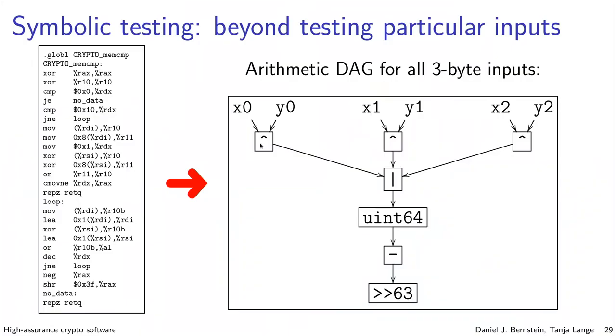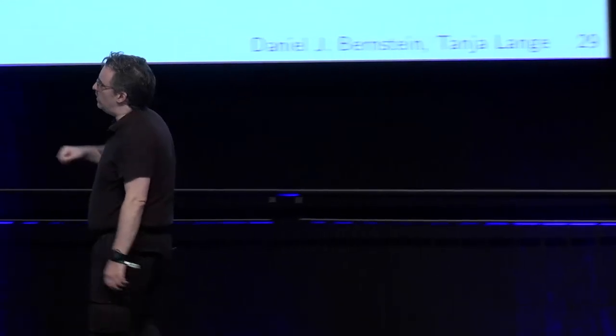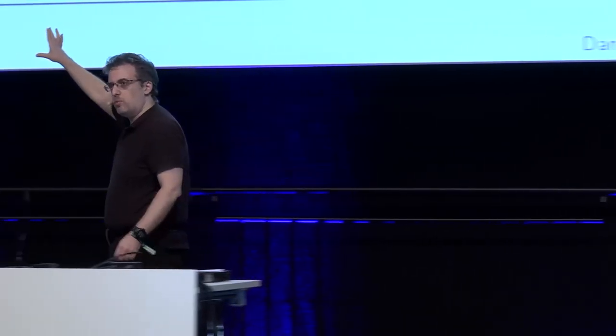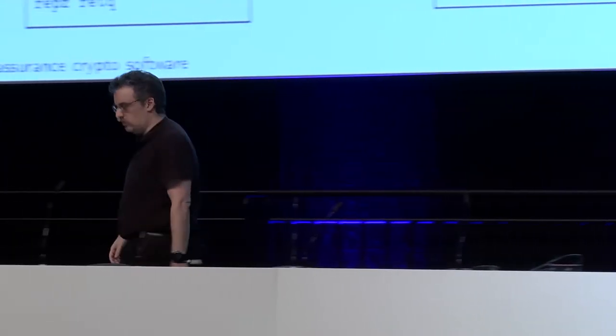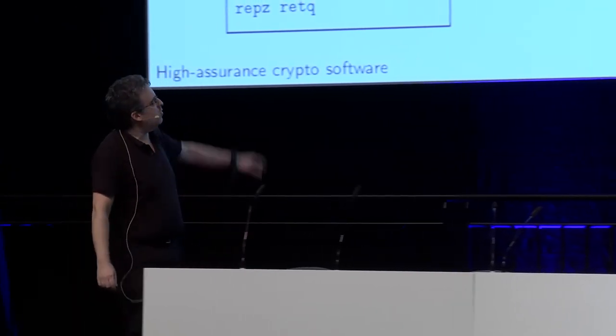You can find real bugs, or use the proof approach, which is much harder. Here's an example. On the left side, we look at it as an audit rather than a test. On the left is the Intel implementation of CryptoMemCmp.